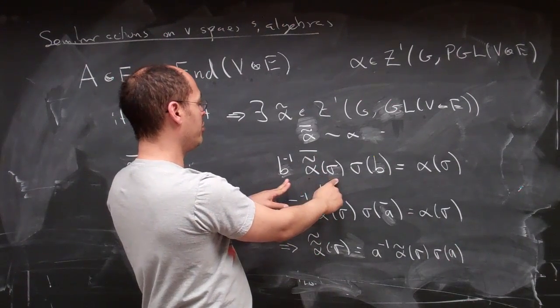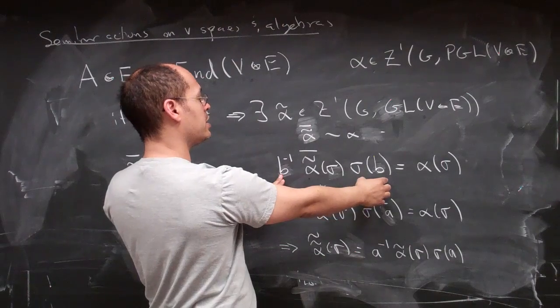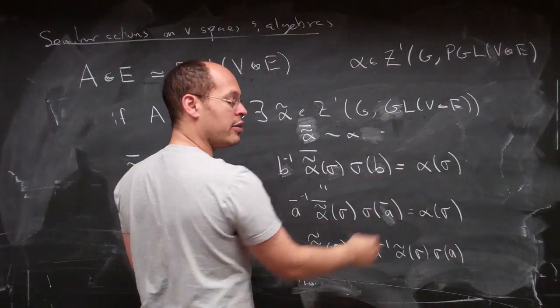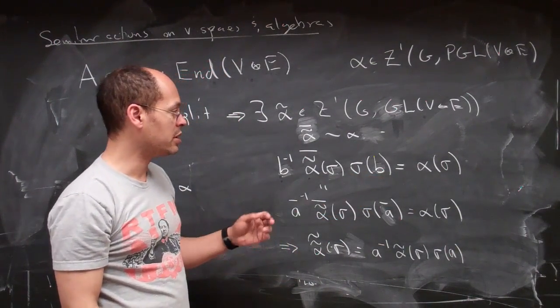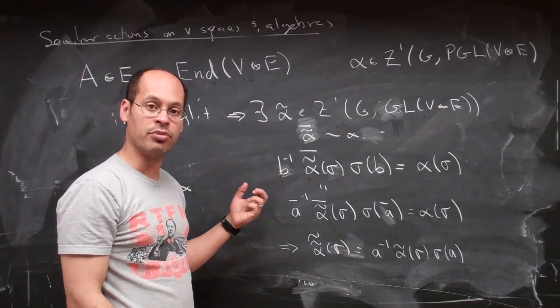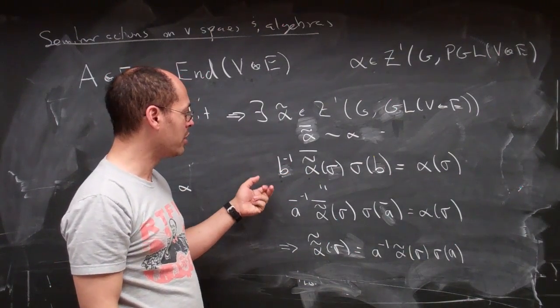Such that if I sandwich the image of my alpha tilde, alpha tilde bar of sigma, between a B inverse and a sigma of B, then that gives me my alpha of sigma. This is exactly the definition of co-homologousness of one co-cycles.